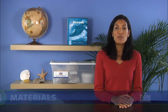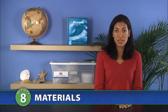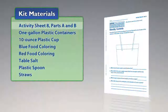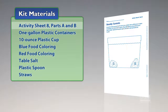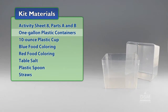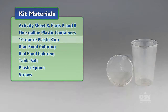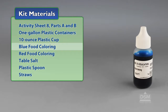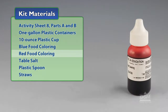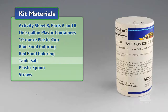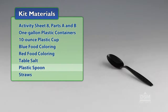You will need the following materials from the kit: Activity Sheet 8, Parts A and B, 1-gallon plastic containers, 10-ounce plastic cup, blue food coloring, red food coloring, table salt, and plastic spoon.